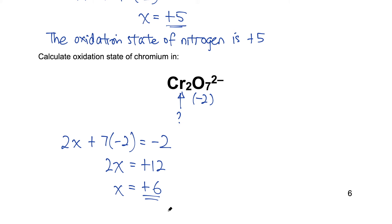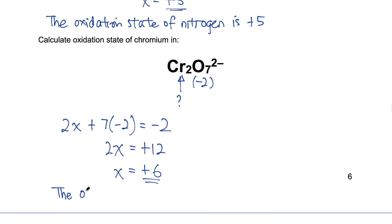A very common mistake for students to make is to end off here. Remember that when there are two chromium, the oxidation state is distributed among them. So the oxidation state of chromium is plus six. So the number in the bracket refers to the oxidation state of chromium in this ion.